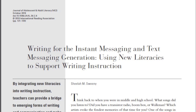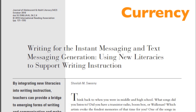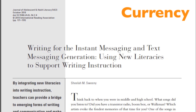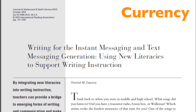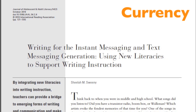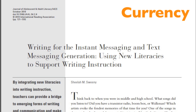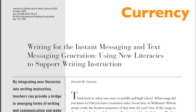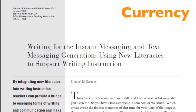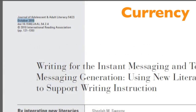Currency refers to the timeliness of the information. It may be crucial when looking for a medical article on brain disease, but not as important when looking for an article on a historical topic. Our article was published in 2010, so we know that the research is current and appropriate for our topic, which is a fairly new issue.